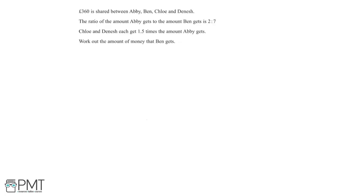In this question, we're told that £360 is shared between Abby, Ben, Chloe and Dinesh. The ratio of the amount Abby gets to the amount Ben gets is 2 to 7. And Chloe and Dinesh each get 1.5 times the amount that Abby gets. We need to work out the amount of money that Ben gets.